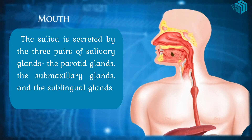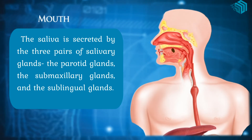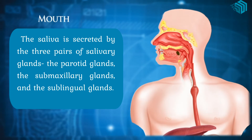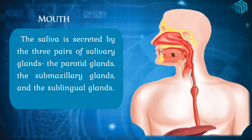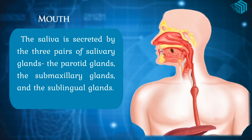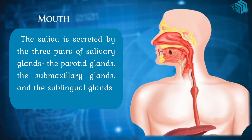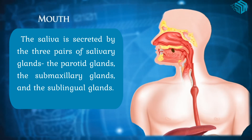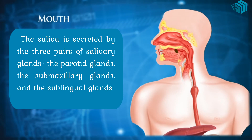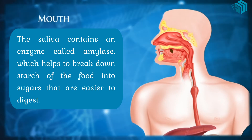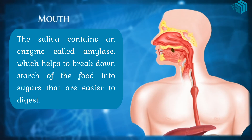The saliva is secreted by three pairs of salivary glands: the parotid gland, the submaxillary gland, and the sublingual gland. The saliva contains an enzyme which helps to break down starch in the food into sugars that are easier to digest.